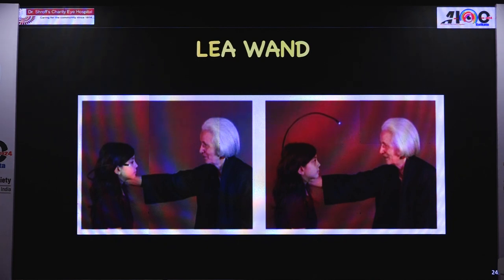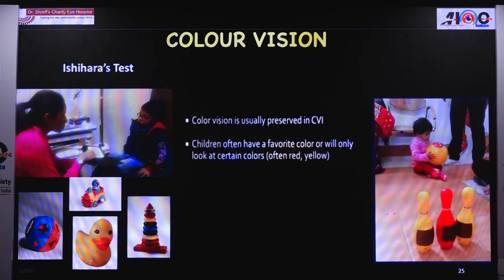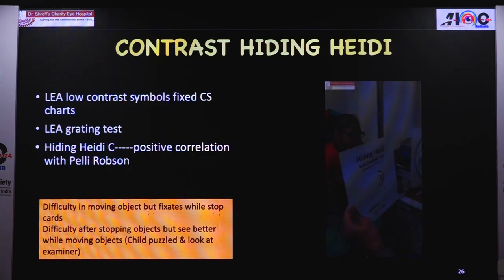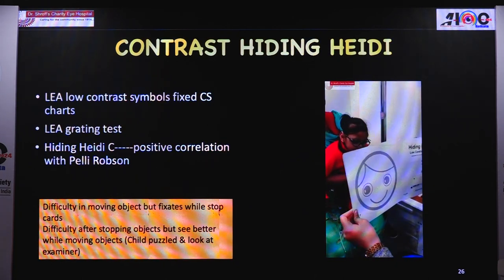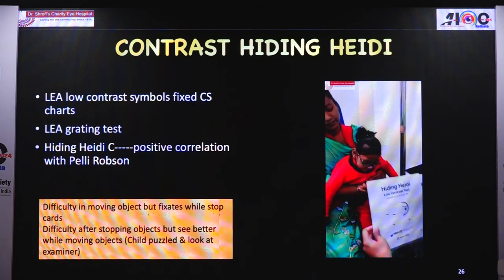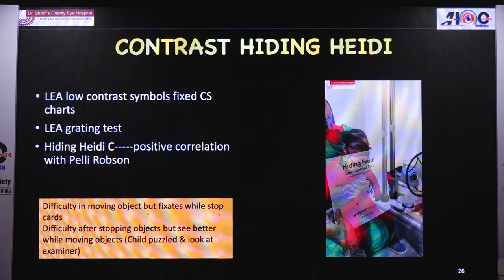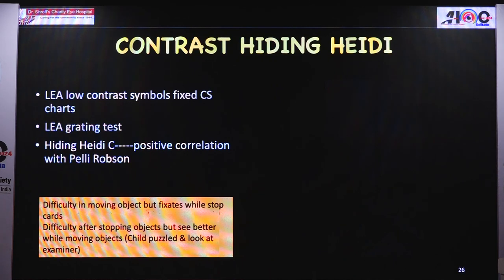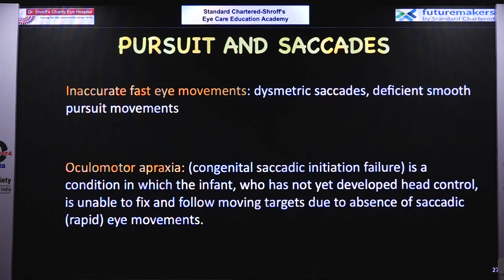The Lea wand is another modality with illumination at the top — a mobile wand moved in any direction — and based on the gaze direction the child follows, the field can be appreciated. Colour vision is usually preserved in CVI children; they may have very poor vision but will identify the colour of your suit in the OPD. Children often have a favourite colour, preferring red and yellow because they have longer wavelengths. Contrast is essential. Lea low-contrast symbols and the hiding Heidi test — with positive correlation with Pelly Robson — assess contrast from 25 to 100%. Pursuit and saccades are also affected — there can be dysmetric saccades or saccadic paralysis as seen in oculomotor apraxia.